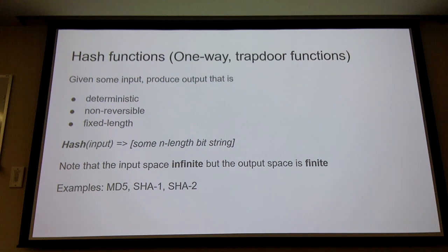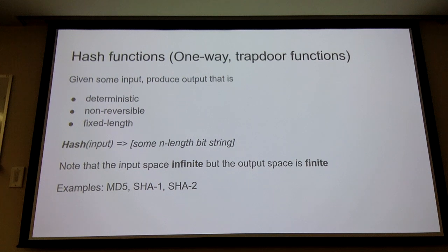First, let's talk about hash functions. Hash functions like MD5, SHA-1, SHA-2, SHA-256, etc. are deterministic — you give it the same input, it gives you the same output. They're not reversible because they are inherently lossy, since there's an infinite number of inputs that correspond to a finite number of outputs.